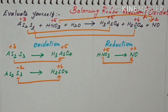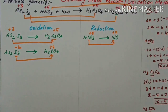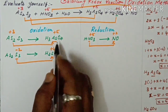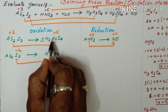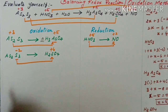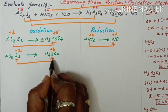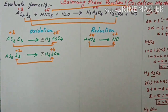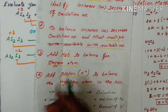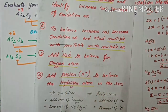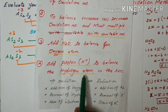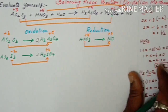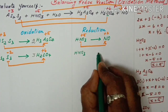HNO3 is on the reduction side. AS2S3 contains arsenic and sulfur, both of which are oxidized. Let's now work on the reduction side with HNO3 giving NO.